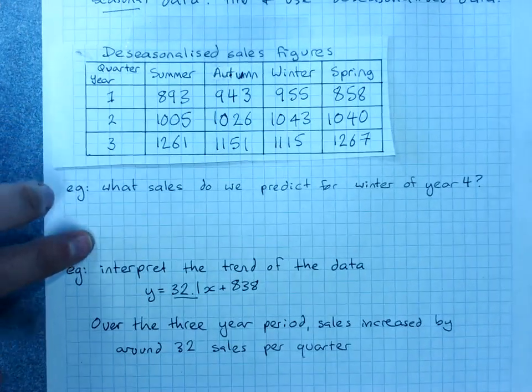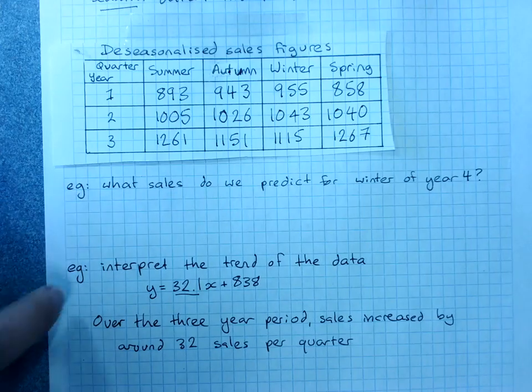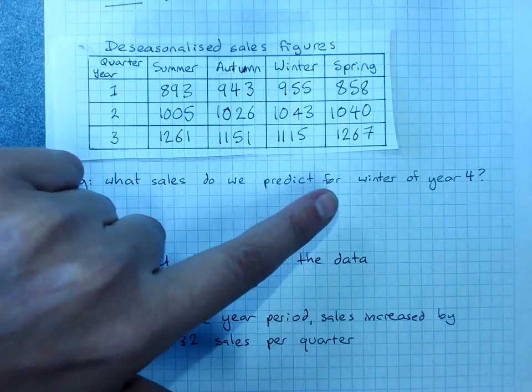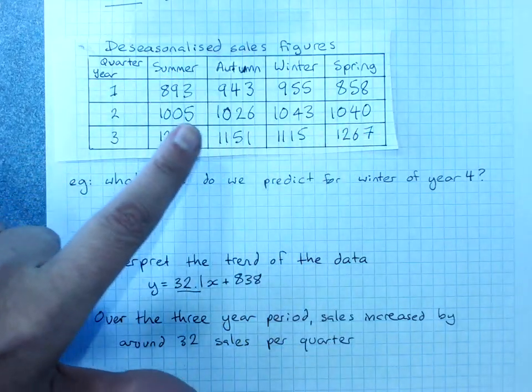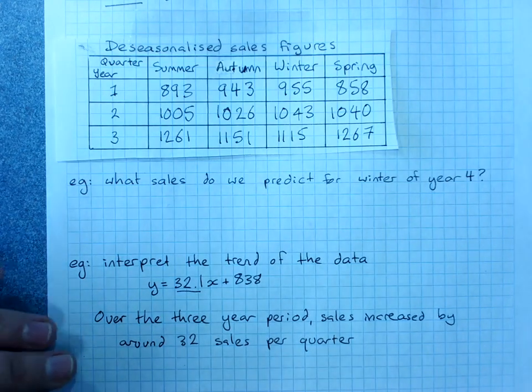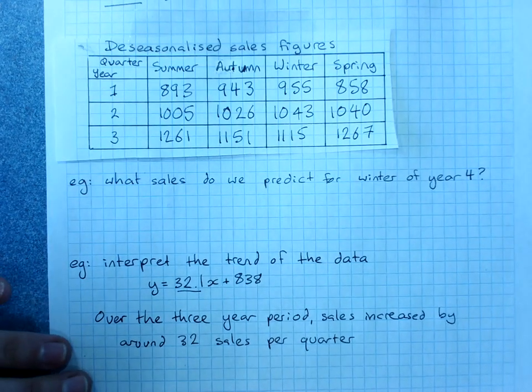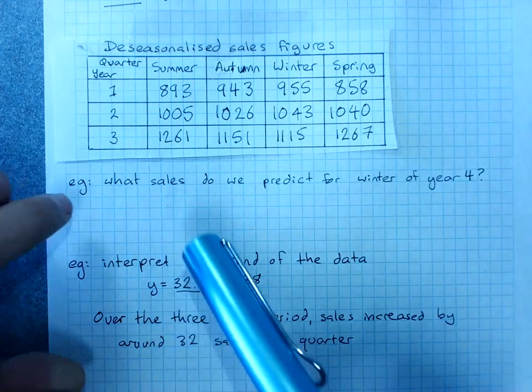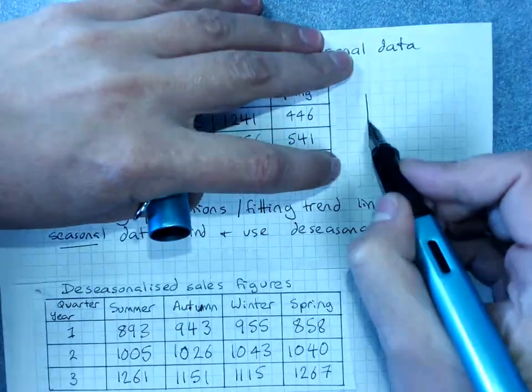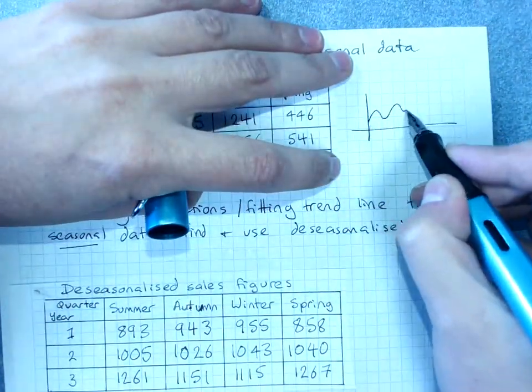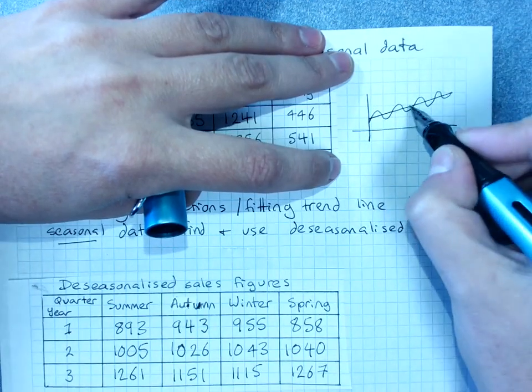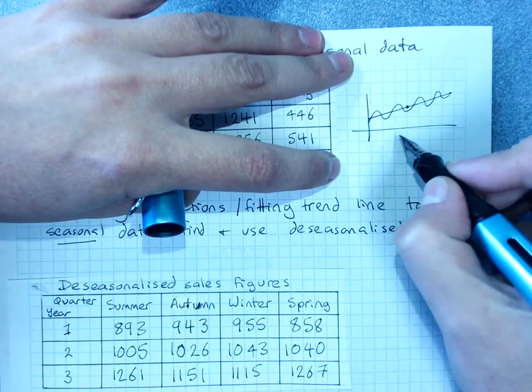Now, when we have to use that trend line, line of best fit, to make predictions, this is our de-seasonalized data. And that's not very much use to us. If you think about some of the graphs that we've looked at, a seasonal graph would have lots of wibbles, that's a technical term, and a line straight through it, but that line isn't very good for predicting.